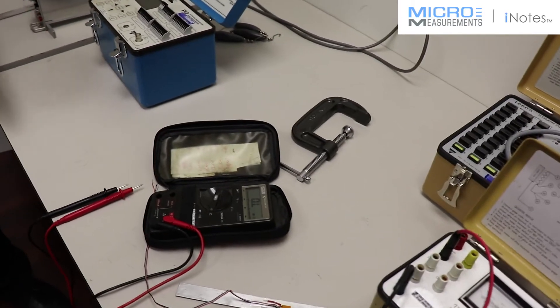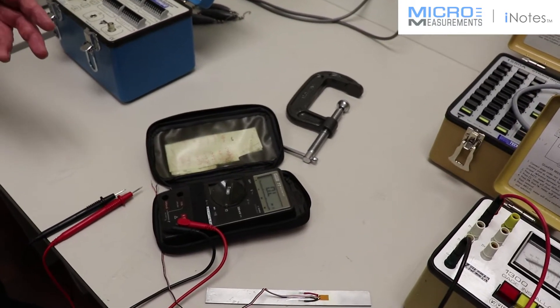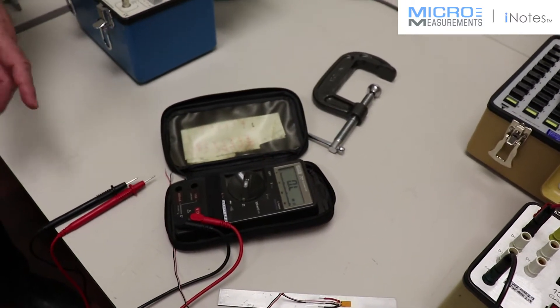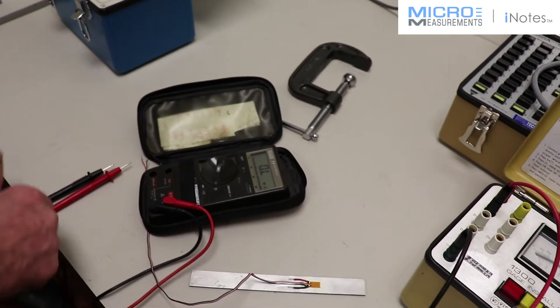Jonathan, I want to use an ohmmeter to see if it would be possible to check the isolation resistance between the gauge and the substrate. Could you show me how that would work? By all means, Larry.